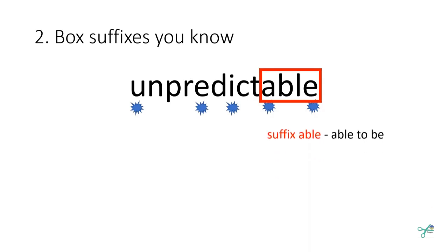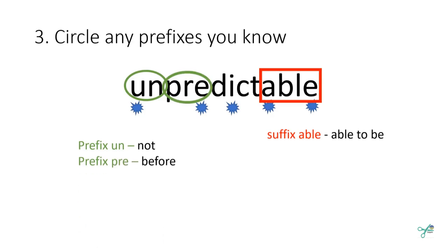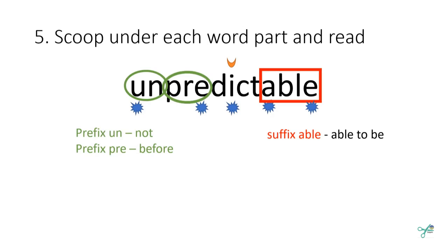Step three has us circle any prefixes we know. In this word, we know that 'un' means 'not' and the prefix 'pre' means 'before.' Step four has us predict vowel sounds based on syllable types. The syllable that's left unmarked is D-I-C-T — a closed syllable with a short vowel sound — so we will pronounce it 'dict.'